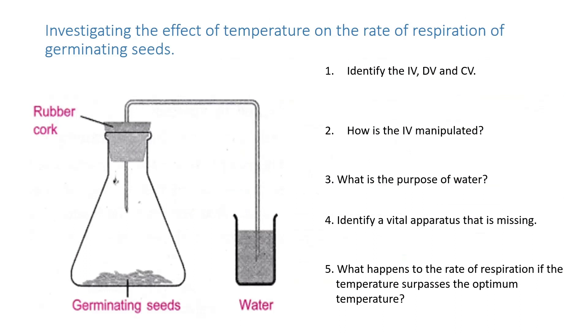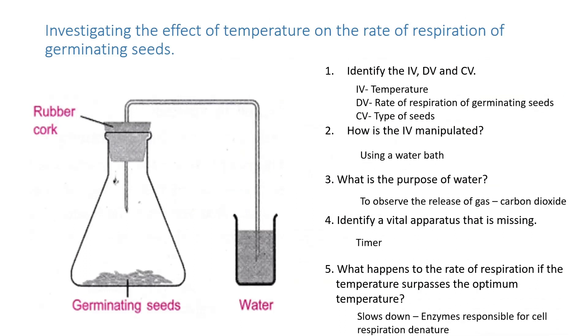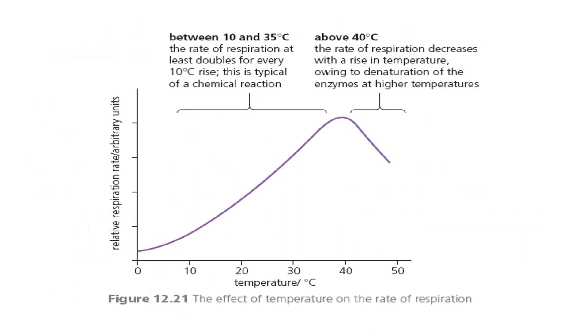This section shows how we measure the rate of germination in respiration. The effect of temperature shows that as temperature increases beyond the optimum, enzymes will denature — the same principle as with enzymes generally.